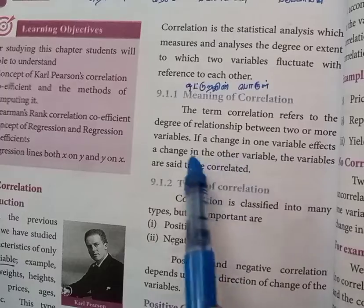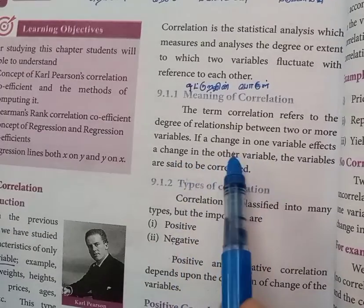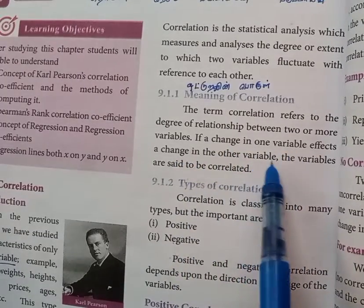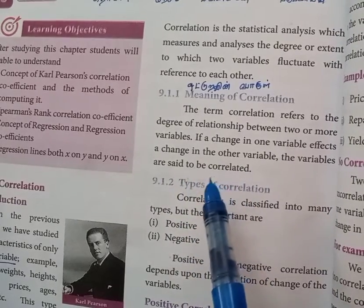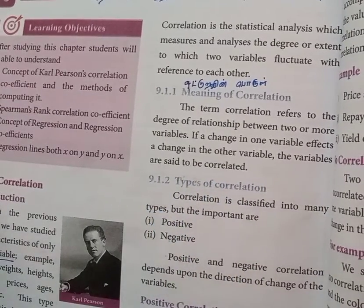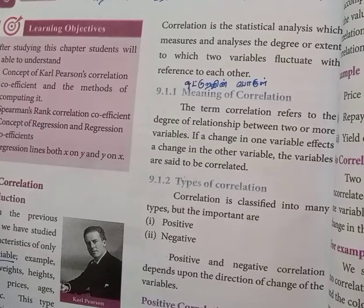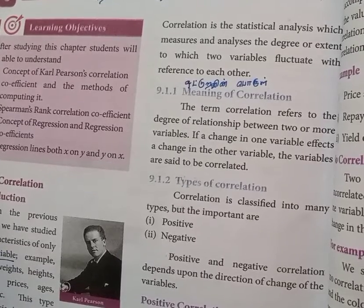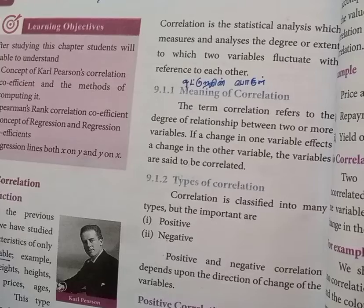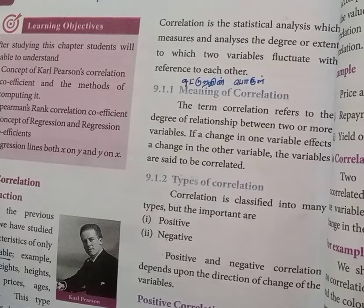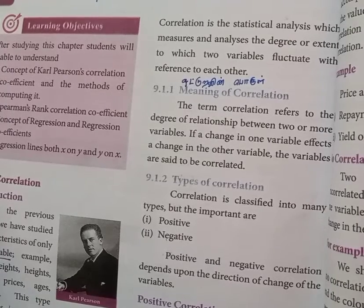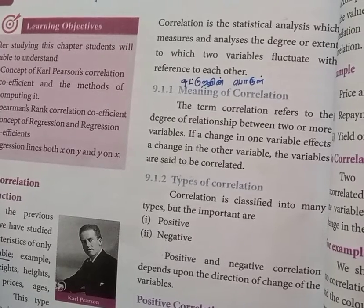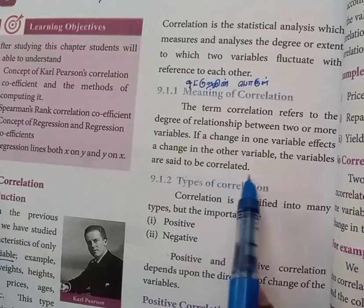The term correlation refers to the degree of relationship between two or more variables. If the change in one variable causes a change in the other variable, the variables are said to be correlated. For example: one pen costs 10 rupees, two pens cost 20 rupees, three pens cost 30 rupees. As quantity increases, the total amount increases — one is dependent on the other. That is called correlated.